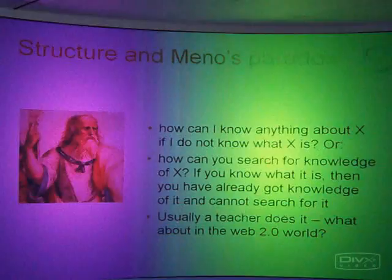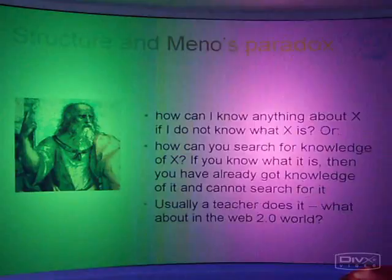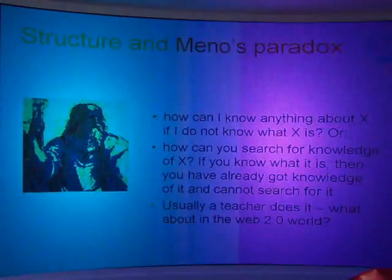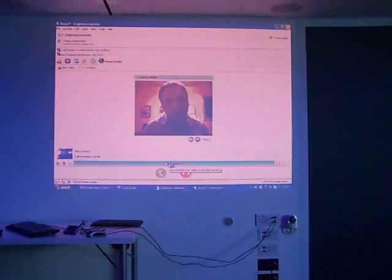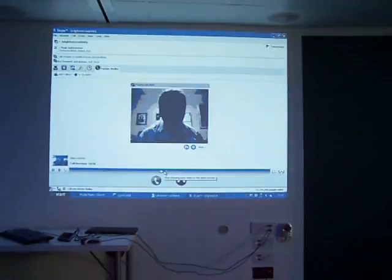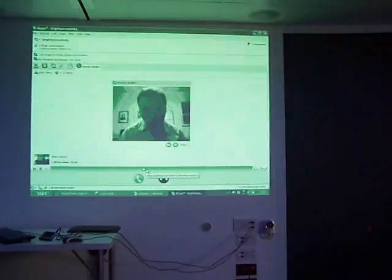The first issue this raises is Meno's paradox: how can I know anything about X if I don't know what X is? How can I search for knowledge of X? If I already know what it is, I've already got knowledge of it and can't search for it. Usually this paradox is overcome by a teacher engaging in Socratic dialogue — the teacher leads you through and provides structure. But what about in the Web 2.0 world, where you just bump into stuff randomly, perhaps through a recommendation? What happens to that structure? It's clear that learners value structure, guidance, and support.